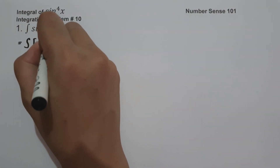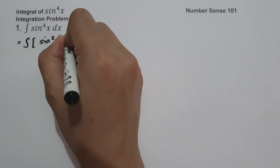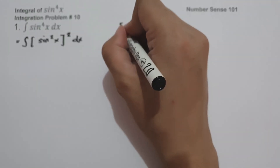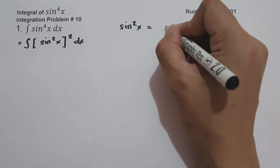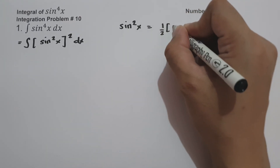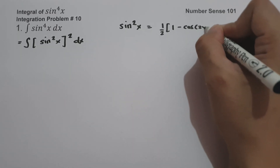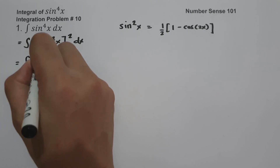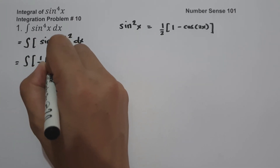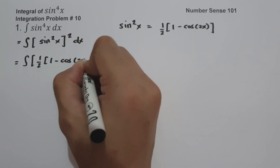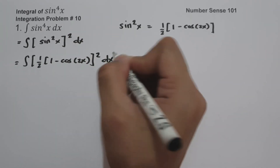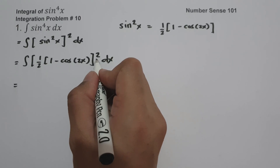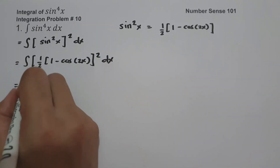Let us use the power reduction formula. The value of sin²(x) is equal to one half times (1 minus cosine 2x). So let us have the antiderivative of one half times the quantity of (1 minus cosine 2x)² dx. Let us distribute the exponent — one half raised to 2 is one fourth — so let us move one fourth in front.